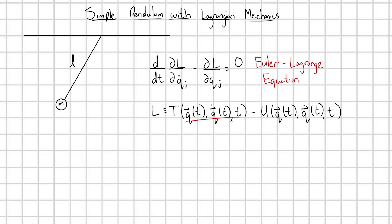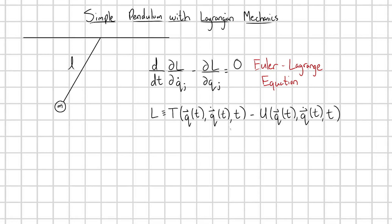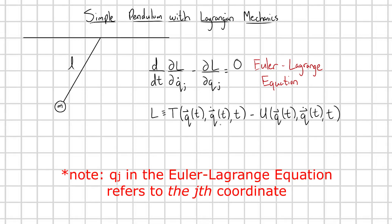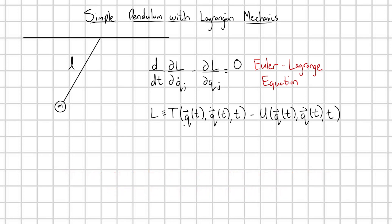Now, what are these Q's? These Q's are generalized coordinates. Those could be angles theta and phi. They could be x, y, and z, just like Cartesian coordinates. They could be a radial distance r. They're generalized coordinates, and we have to define them based on whatever problem we're interested in.